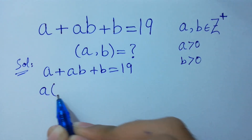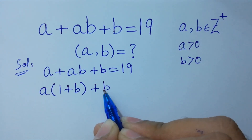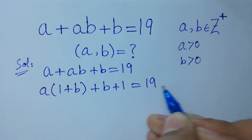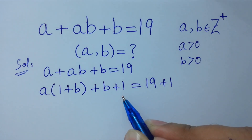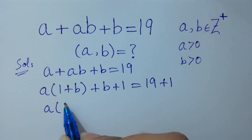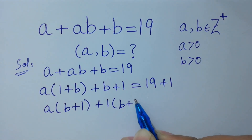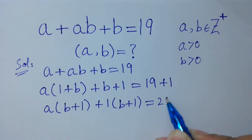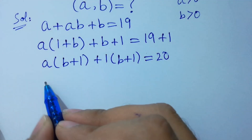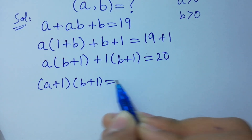Here a is common, so we factor: a times (1 plus b) plus b plus 1 equals 19 plus 1. I added 1 on both sides. This gives us a times (b plus 1) plus (b plus 1) equals 20, which factors as (a plus 1)(b plus 1) equals 20.